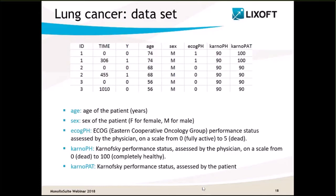Let's look at a short extract of the dataset, starting with the first three columns. For each individual, there are two times: time zero, which is the beginning of the observation period, and the time of death associated with a one in the column Y, which is the observations column; or the time of end of observation associated with zero for right-censored individuals. In addition, there are five covariate columns: age, sex, two performance status scores assessed by the physician (ECOG and Karnofsky score), and finally a Karnofsky score assessed by the patients themselves.